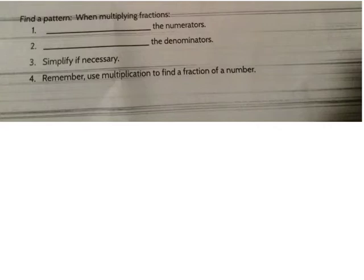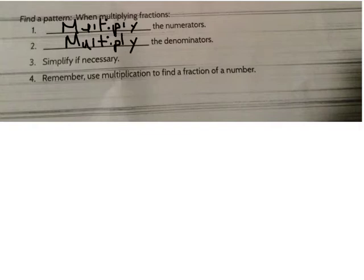What I proved by finding area is that when I multiply fractions, I can simply multiply the numerators, multiply the denominators, and then simplify if necessary. Remember, use multiplication to find a fraction of a number. So if you see a word problem that asks you to find a fraction of a number, multiply the fraction times that number.